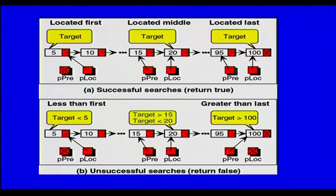For searching, you can search for a target node. For example, with elements 5, 10, 15, 20, 9, 5, 100 — if you search for a value less than the first node you would not find it; if you search for a value greater than the last node you would not find it; if the target is between two non-adjacent values like 15 and 20 you would not find it. You can search accordingly.